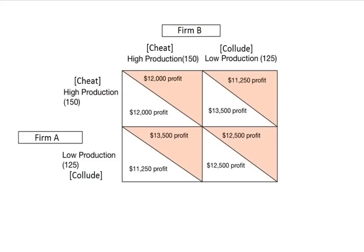Firm B faces the same situation. If firm A decides to collude, firm B has the choice between $12,500 and $13,500 — they choose $13,500 and cheat. If firm A is cheating, firm B has the choice between $11,250 and $12,000, and they would choose $12,000. So firm B also has a dominant strategy to always cheat. We end up with both firm A and firm B cheating — the dominant solution of cheat/cheat — which is worse than if they would both just cooperate.